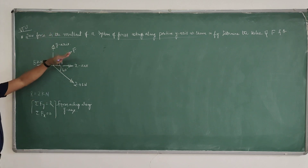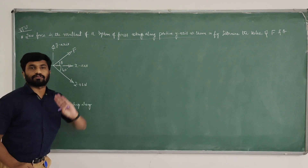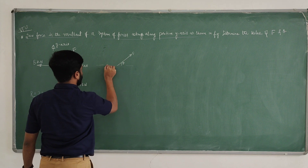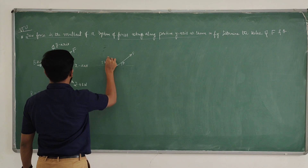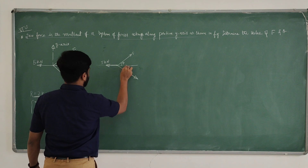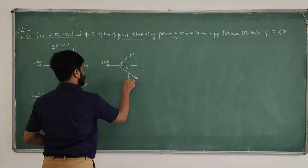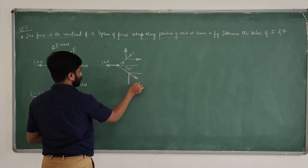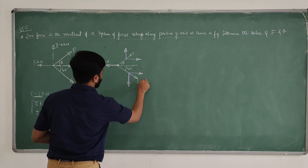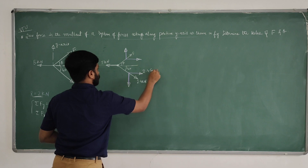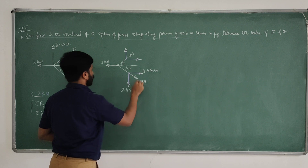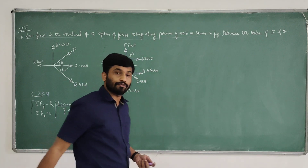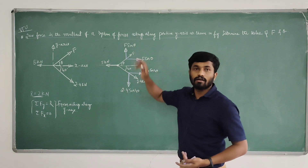So sigma Fy equals R and sigma Fx equals 0. R value is 2 kilonewton. Now write the free body diagram. We have theta, a 5 kilonewton force, and another force of 2.4 kilonewton at 40 degrees. Resolving the 2.4 kilonewton force gives components 2.4 cos40 and 2.4 sin40. Similarly, F resolves into F cos theta and F sin theta.